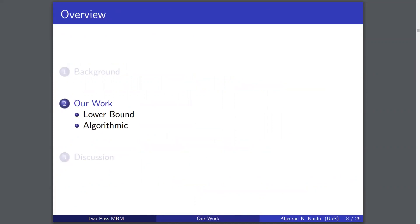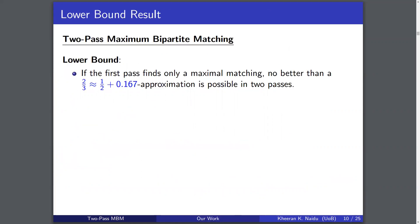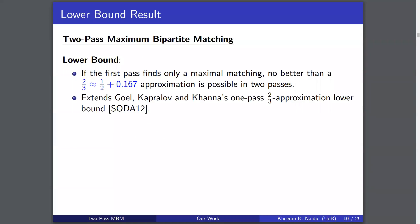I'll start first with our lower bound result. In order to prove our lower bound, we extend the work by Goel, Kapralov, and Khanna, where they prove the exact same two-thirds approximation but in the one-pass setting. We show that their techniques and methods can be extended to our two-pass setting.